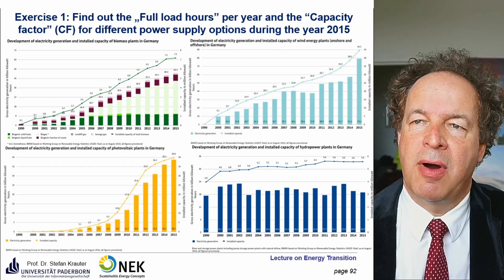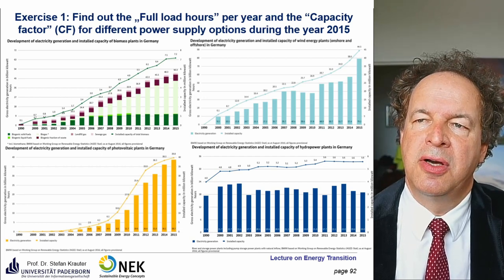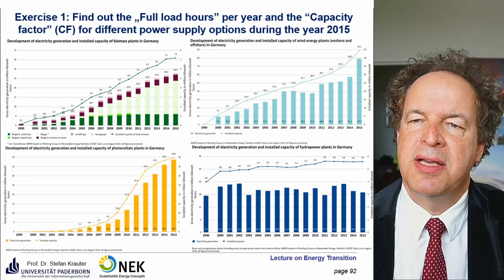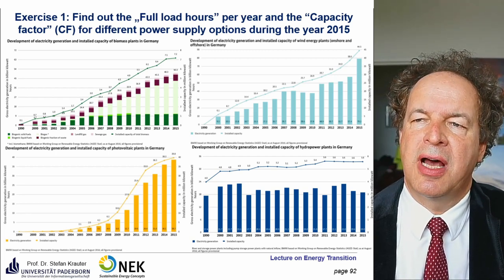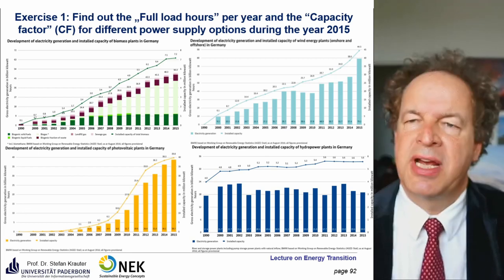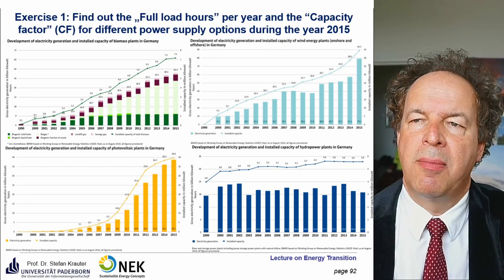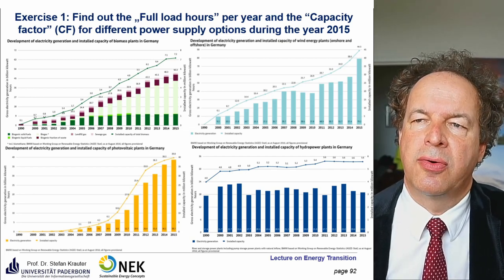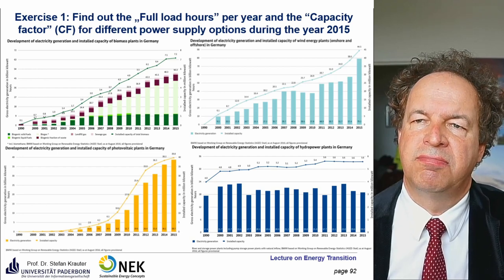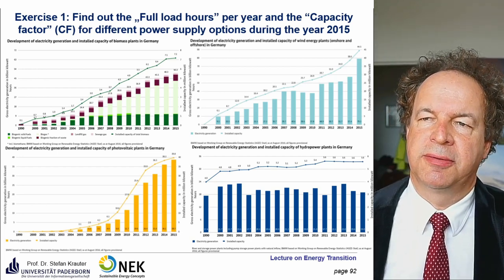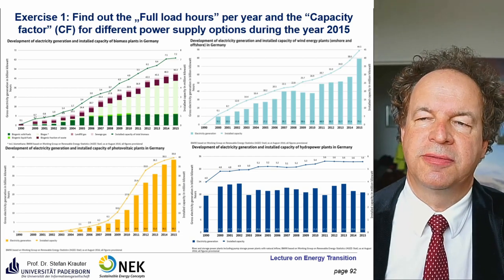You will find the capacity factors are quite different: hydropower has quite good utilization, wind power also still quite good, photovoltaics is lower — Germany is not the best location, so around 10%. Biomass is utilized quite well, perhaps around 30–50%. That's your homework to find out.